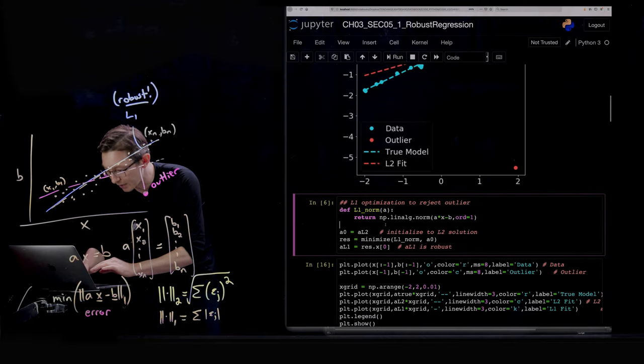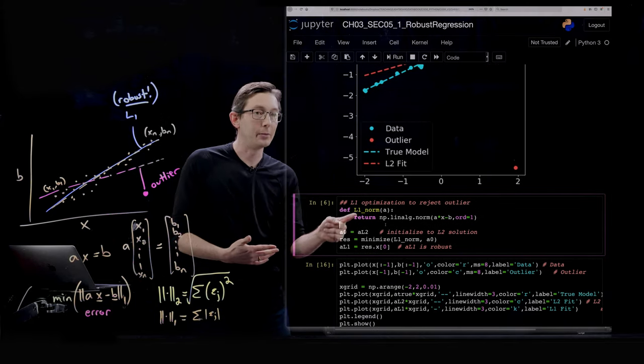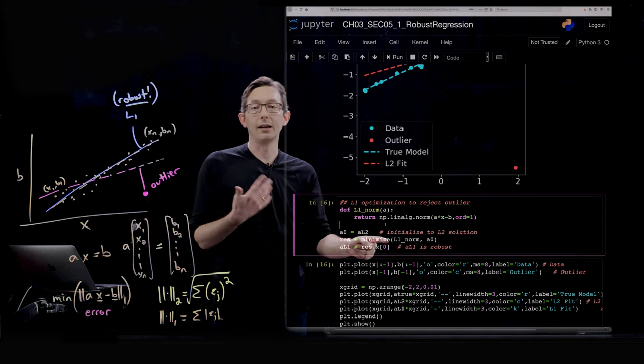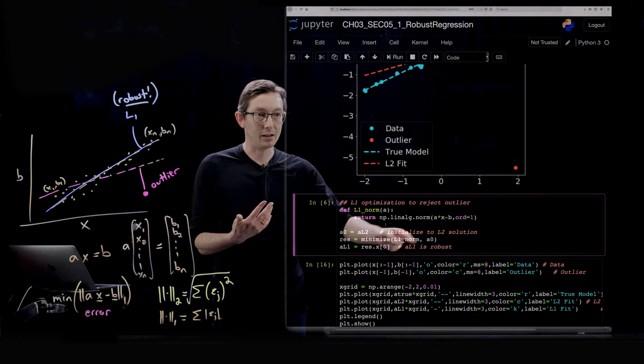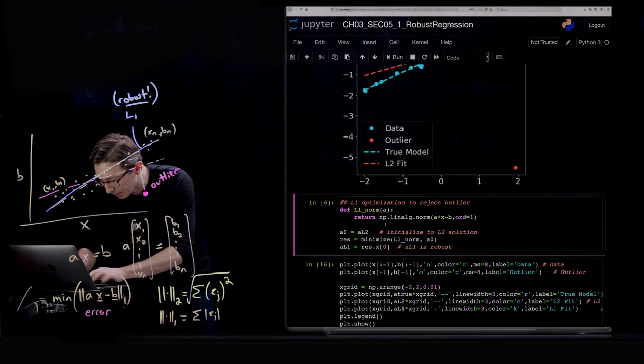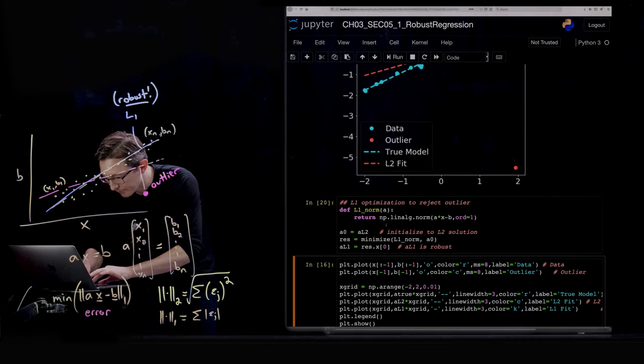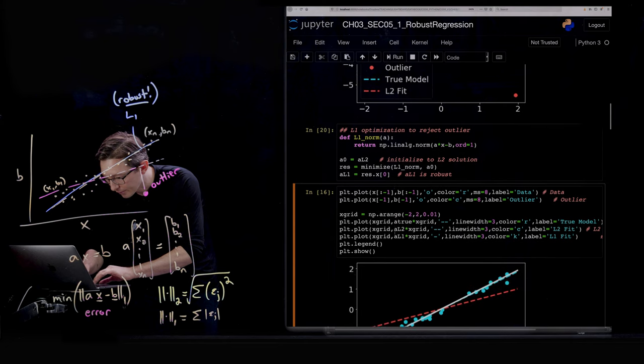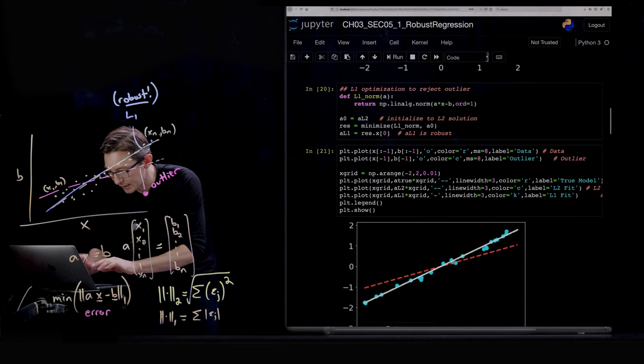So now we're going to minimize with the one norm. So again, we define the one norm. We're using this built-in minimization line or command. So I'm going to run this. I think it ran. And now I'm going to plot.